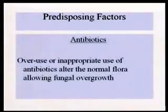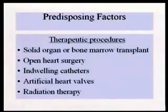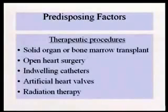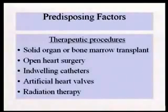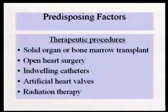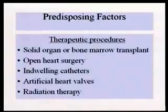In that case, that's not oversight because that's about the only therapy you can do. More predisposing factors include therapeutic procedures. With a solid organ transplant, bone marrow transplant, or open-heart surgery, you get different organisms — different fungi that usually infect — and they'll go through a whole different scale of which is the drug of choice depending on the predisposing condition. Indwelling catheters, artificial heart valves, and radiation therapy are also factors.